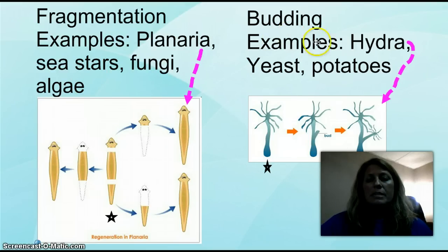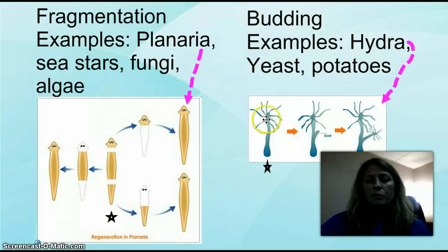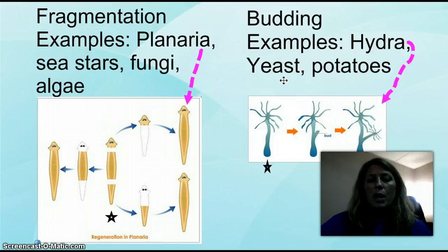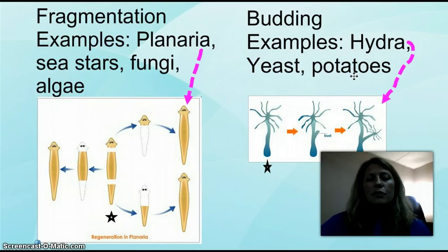For budding, some examples would be hydra — I have a diagram. Starting with the mature hydra, you can see on the side it's got a little bud starting to grow. It will keep growing and developing, and when it's mature it will fall off and be a full-grown hydra. Yeast also reproduces this way, and so does potatoes. If you ever left a potato in the refrigerator, you'll start having these little green spots growing in leaves — those are buds.